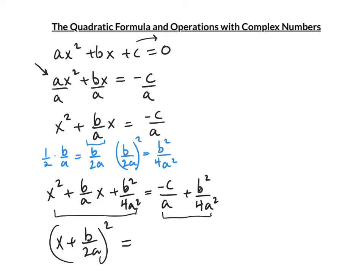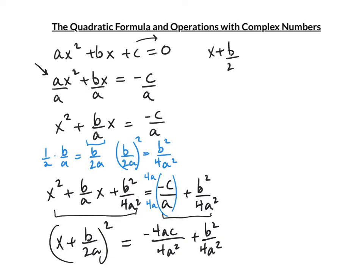The right side needs a common denominator. The common denominator of 4a² and a is 4a². Multiply -c/a by 4a/(4a) to get -4ac/(4a²) + b²/(4a²). Combining and reordering gives (b² - 4ac)/(4a²).